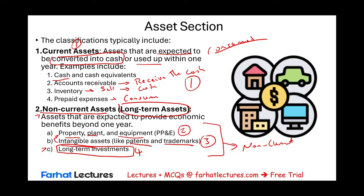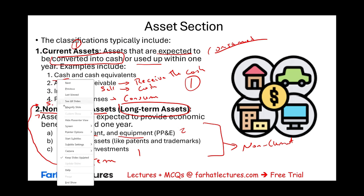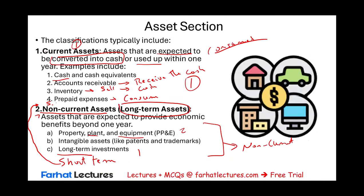Long-term investments are considered non-current, meaning we expect to keep those investments for a longer period of time. We could also have short-term investments, which means we expect to sell them in the near future — those are considered current assets. Under short-term investments, we could have investments in stocks or investments in bonds.